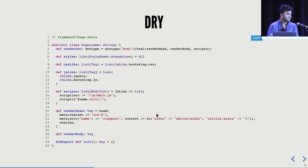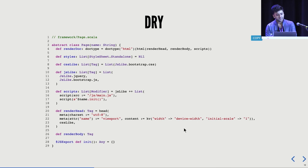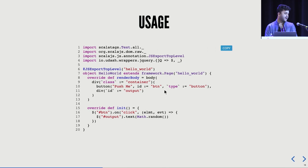The biggest use case, besides having a strongly typed language for writing HTML, is templating. If you have a bunch of pages with the same head section — all importing similar JavaScript libraries — you can abstract that away. I have an abstract page class with a single abstract method, renderBody, because every page has a different body but everything else is the same. I build it all together in renderDoc which says: HTML, a head, a body, and a bunch of scripts at the end.